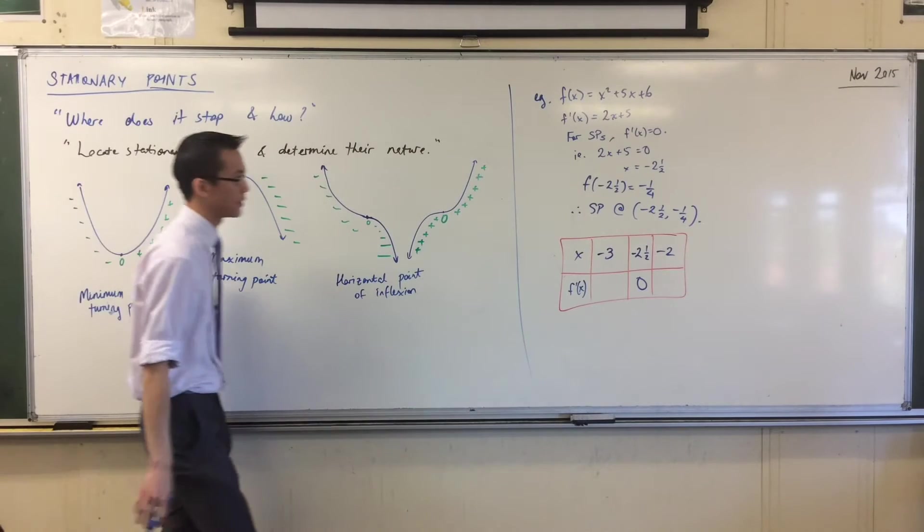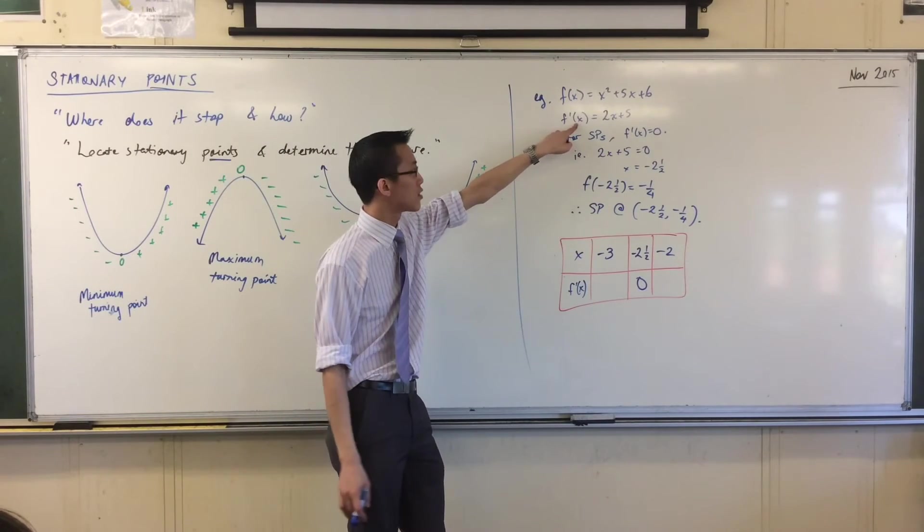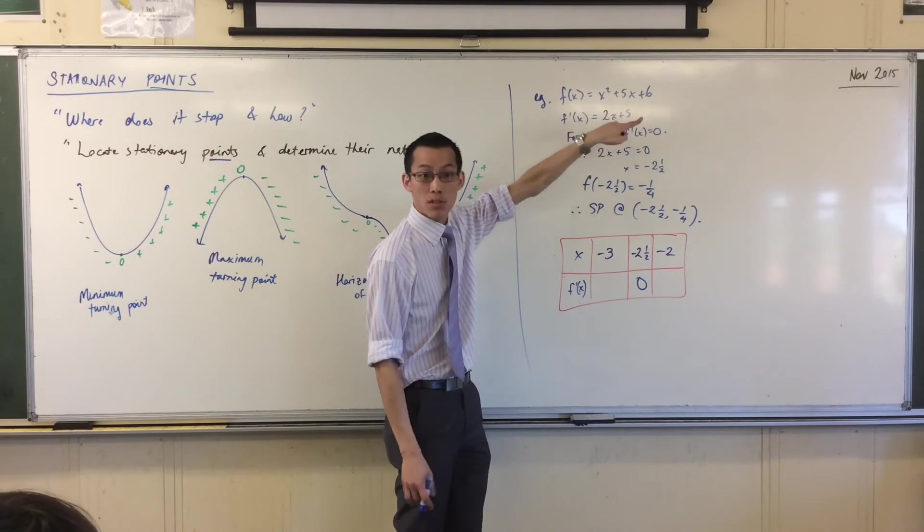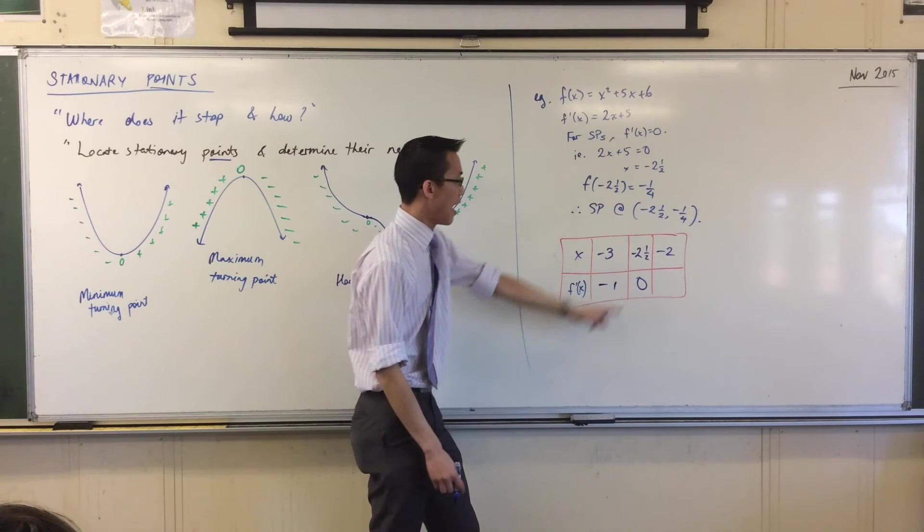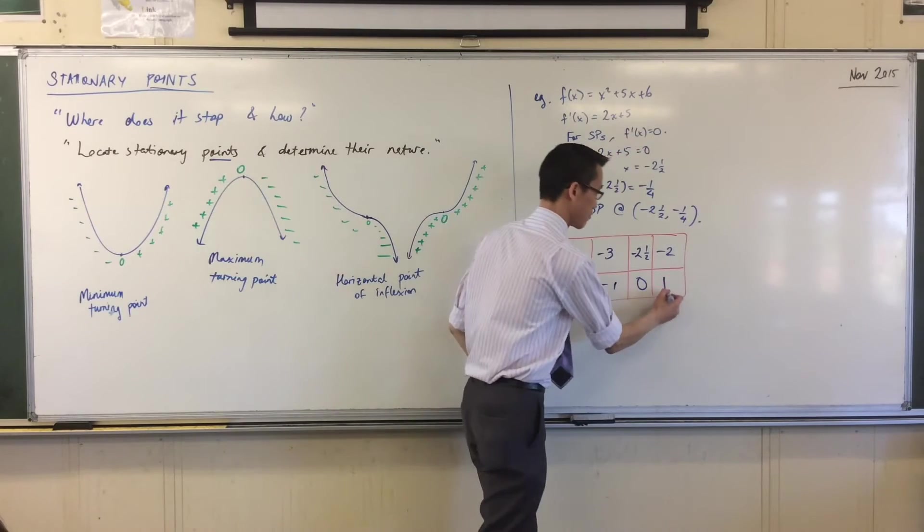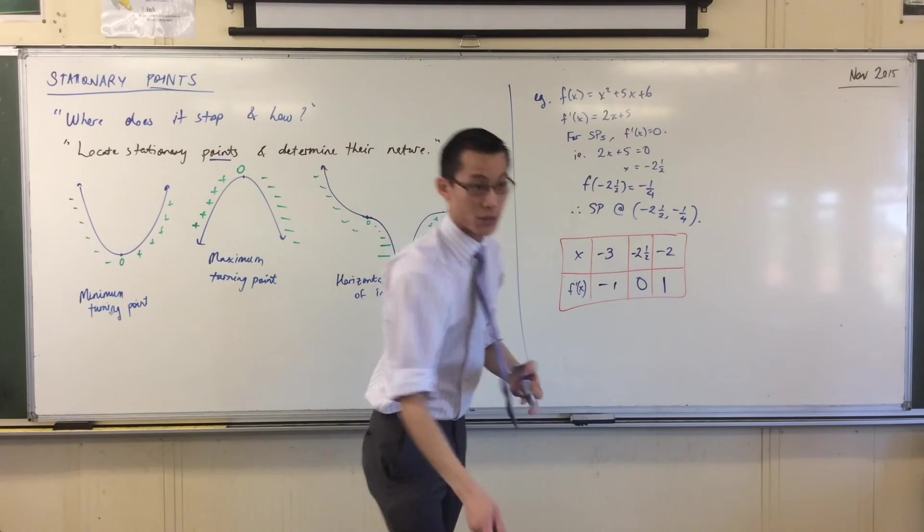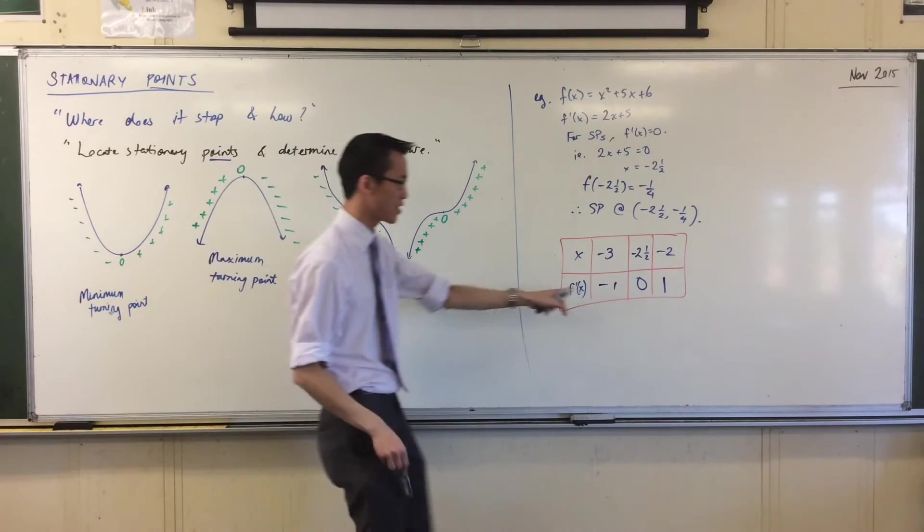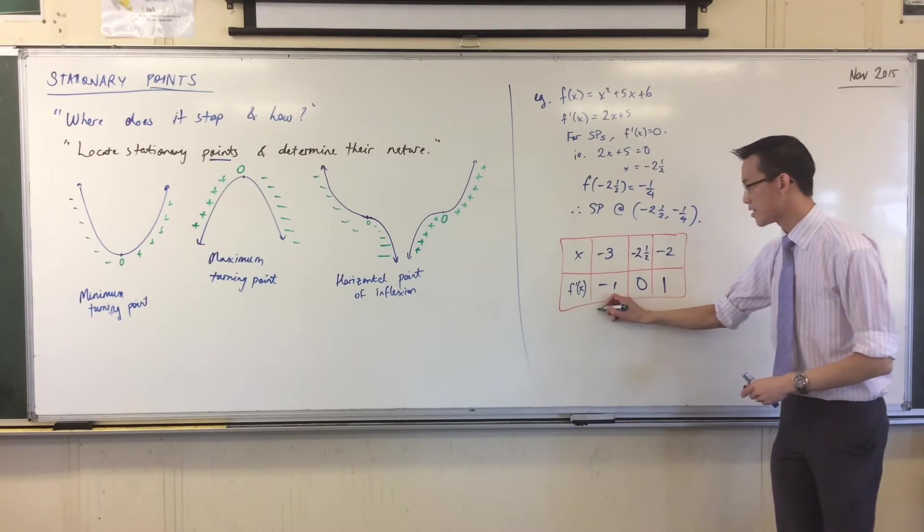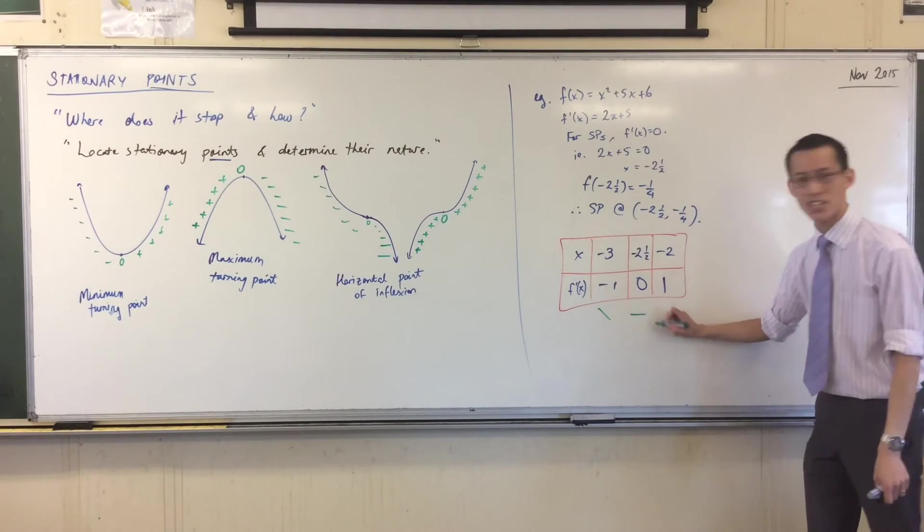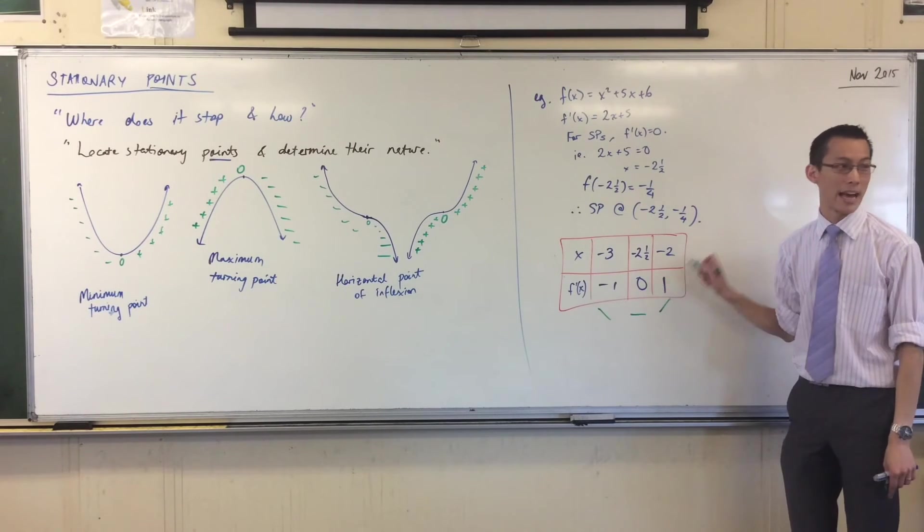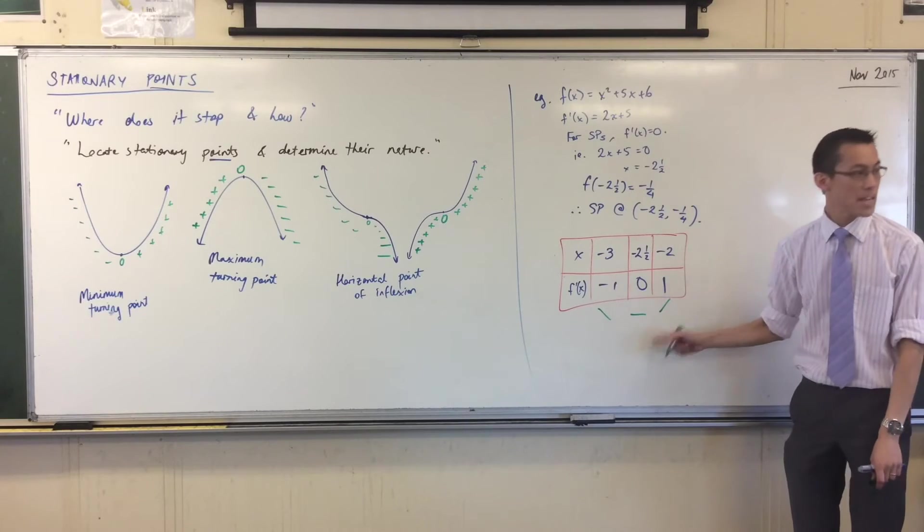Here is f dash. So what's f dash of negative three? Minus six plus five, that's negative one. F dash of negative two is minus four plus five, which is positive one. So now when I look at this, and this is literally what I do, I say look, my gradient transitions from negative to zero to positive. Negative means I'm decreasing, zero means there's a stationary point, and then positive means I'm going up. What does that shape look like? That's a minimum, isn't it?